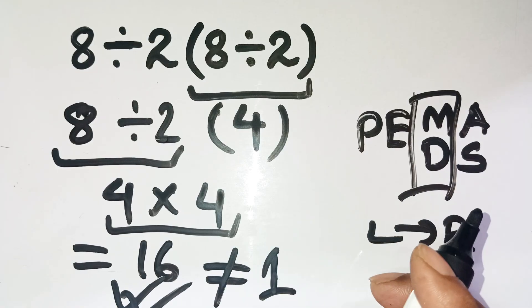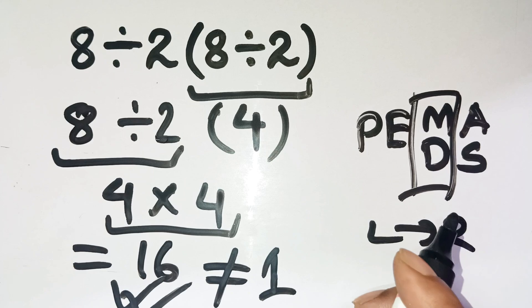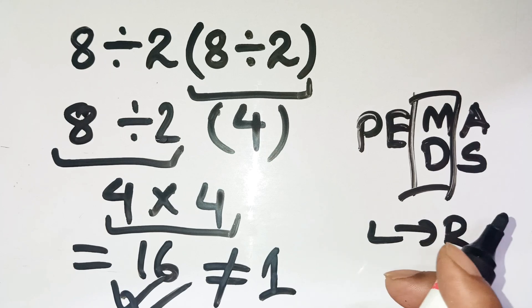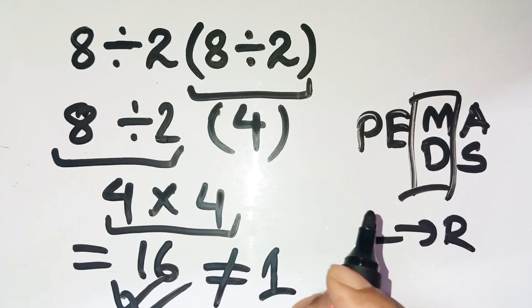Imagine if you were coding or calculating chemistry ratios or even balancing equations. Doing it out of order could ruin everything.